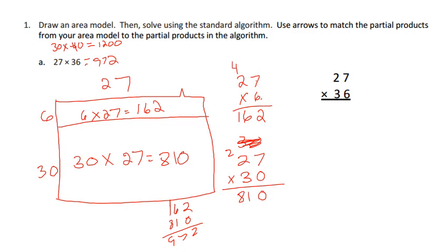Now let's look at the standard algorithm. 6 times 7 is 42, carry the 4. 6 times 2 is 12 and 4 is 16, so 162 the same as we got at our area model over here. Now we're going to the 30 but I'm going to put my 0 down here so I can just multiply by 3 now because I've taken the 10 out. 3 times 7 is 21, carry the 2. 3 times 2 is 6 and 2 is 8. When I add them up: 2, 7, 9, 972. So I got the same answer twice.